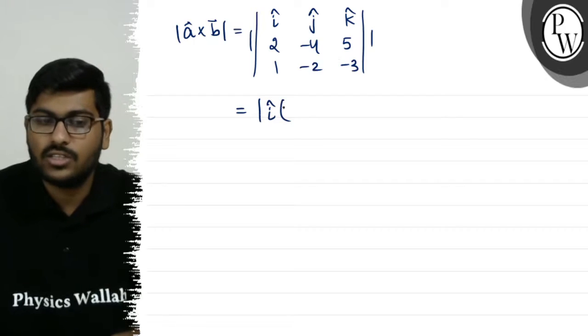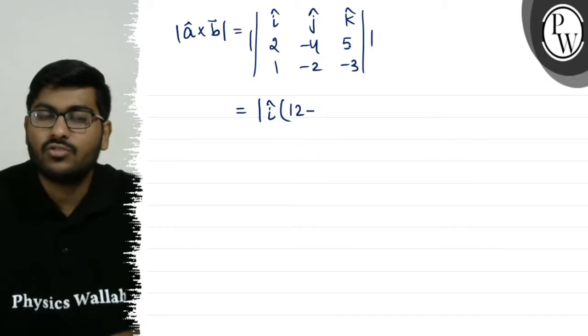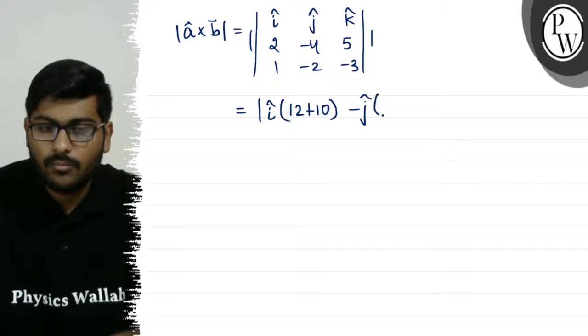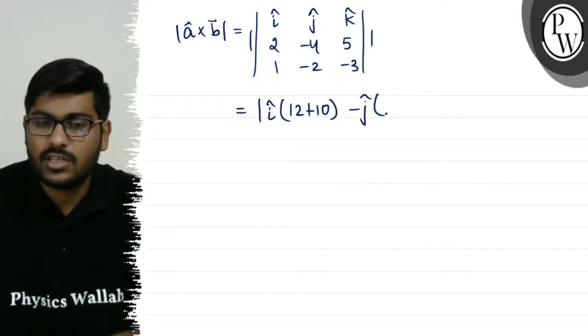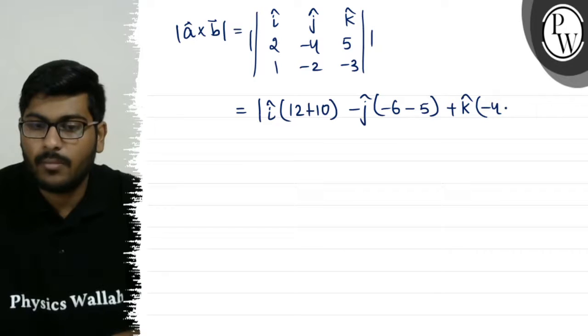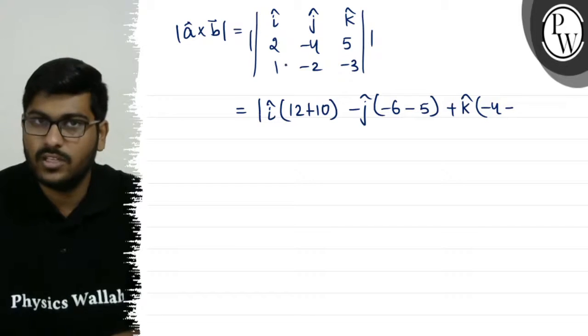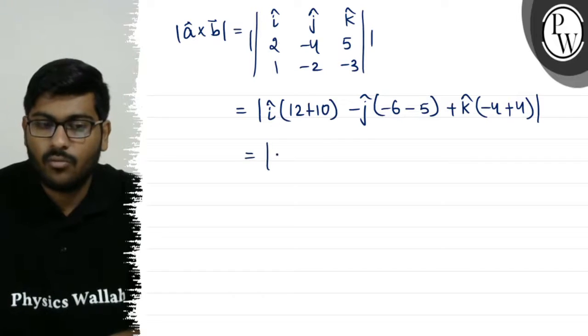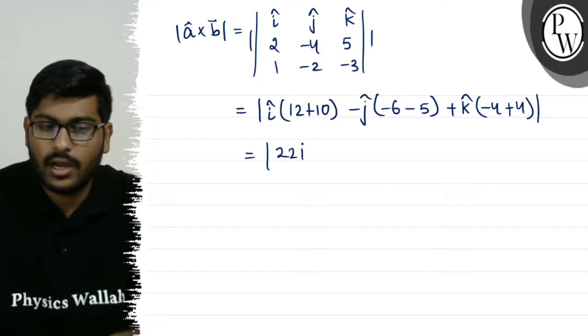This equals i-cap times (minus 4 into minus 3 is 12 minus minus 2 into 5, which is plus 10), so 22i-cap. Minus j-cap times (2 into minus 3 is minus 6 minus 1 into 5 is minus 5), so minus 11j-cap. Plus k-cap times (2 into minus 2 is minus 4 minus minus 4 into 1 is plus 4), so 0k-cap.